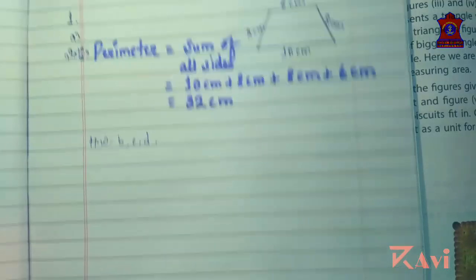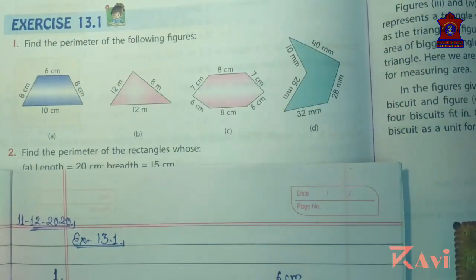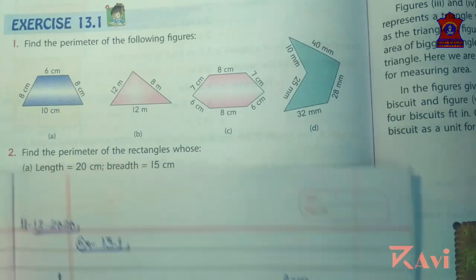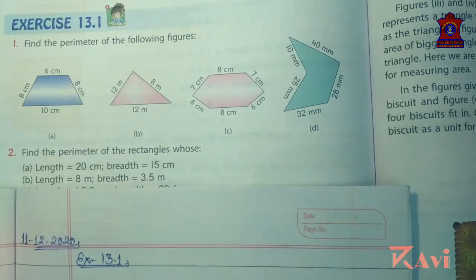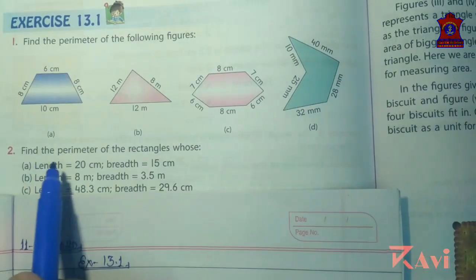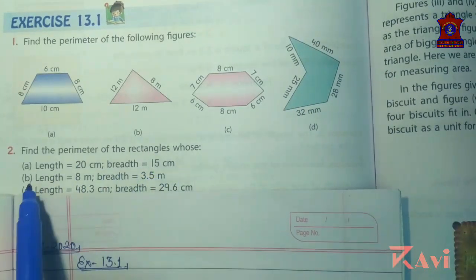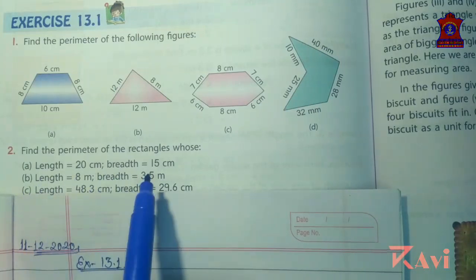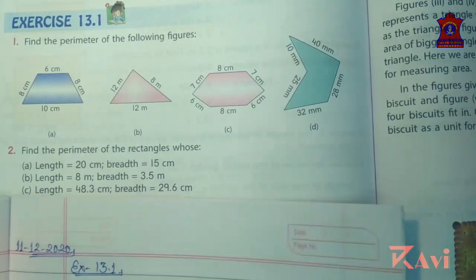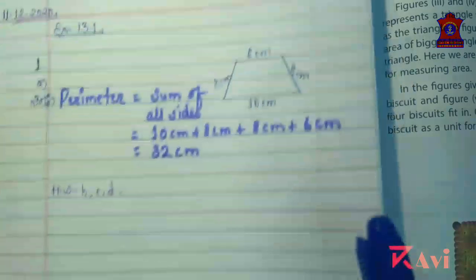Now look at question number 2: find the perimeter of the rectangles whose length and breadth are given. In question number 2 we will be using the formula.